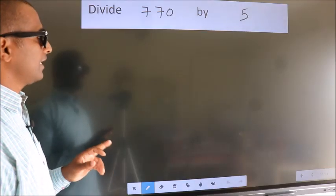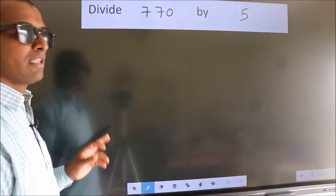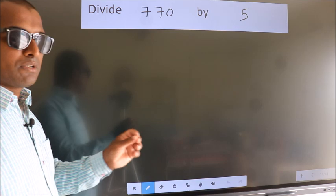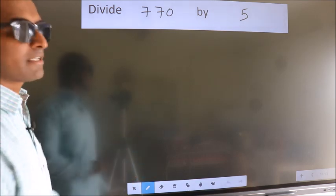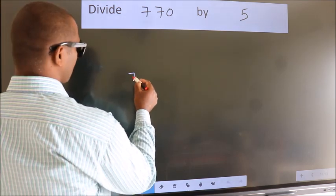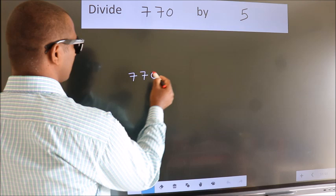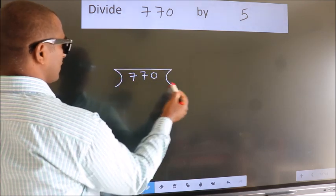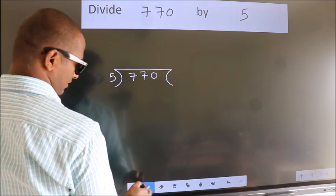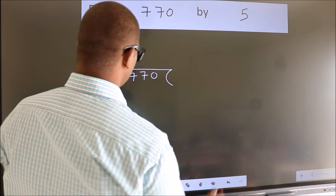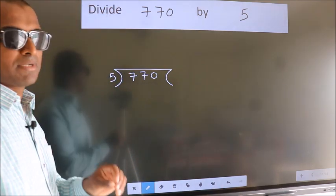Divide 770 by 5. To do this division, we should frame it in this way: 770 here, 5 here. This is your step 1.